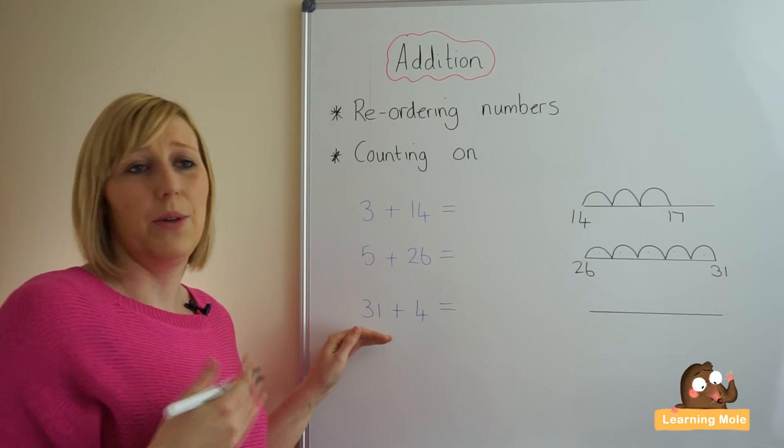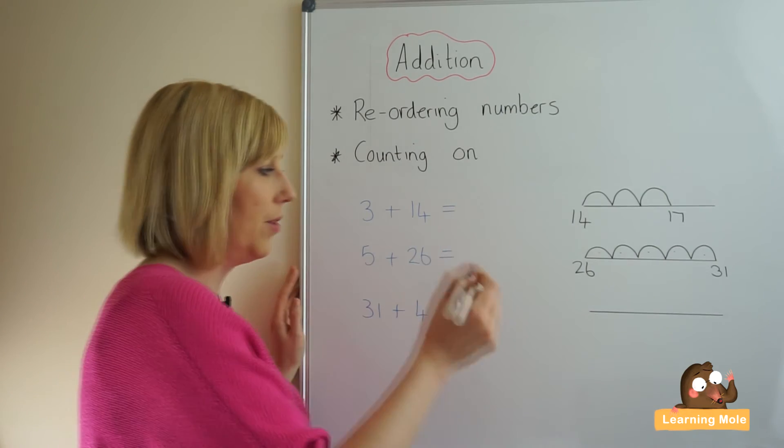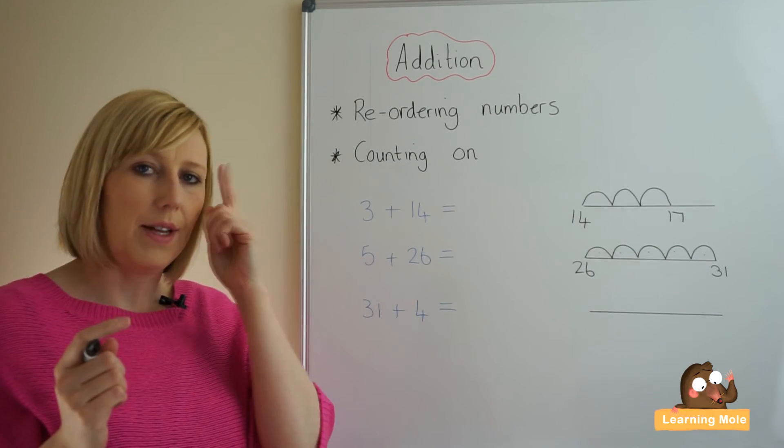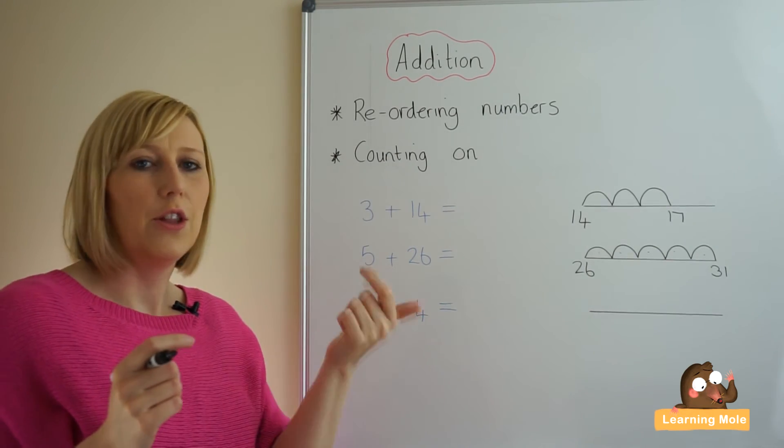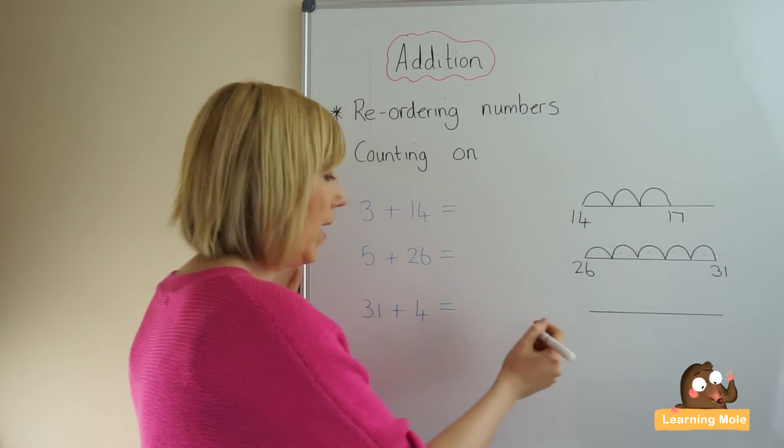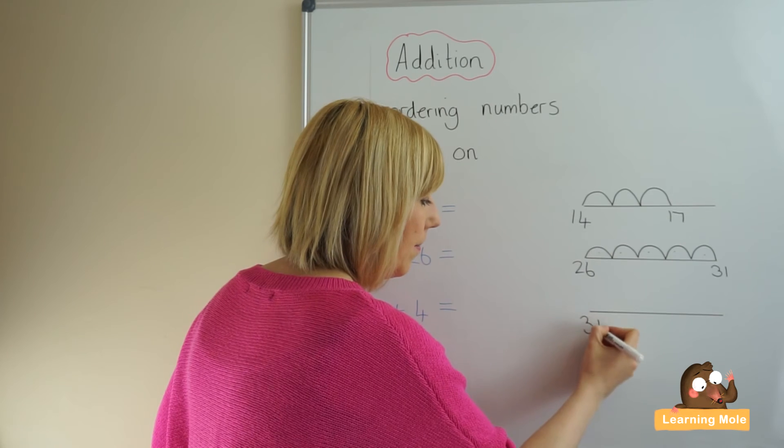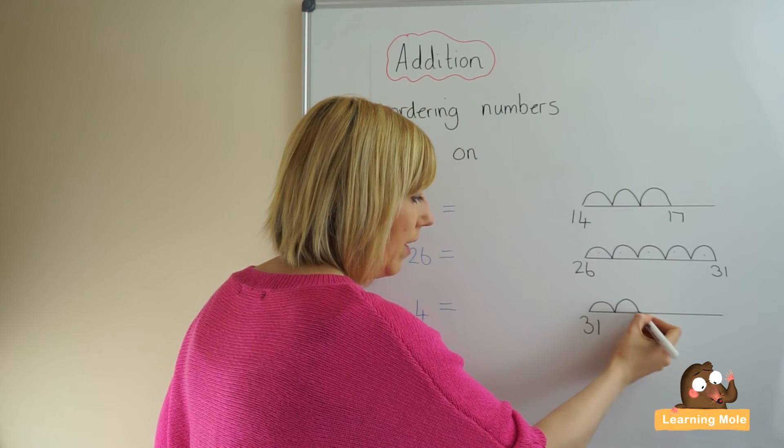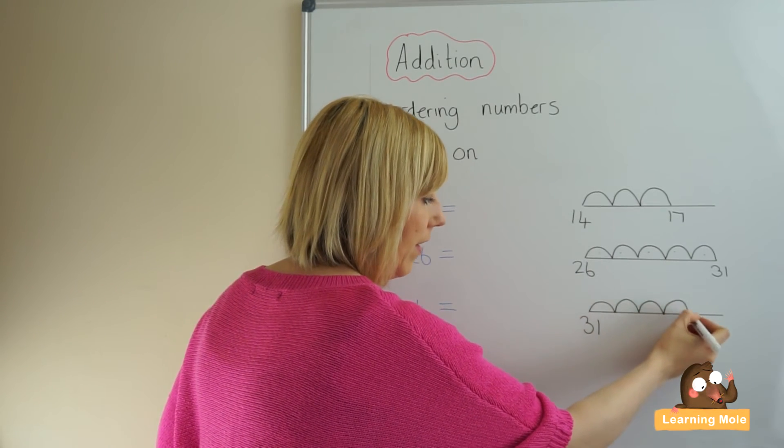Last one, we already know it's already in the correct order so we put 31 in our heads: 31, 32, 33, 34, 35. And on our number lines: 31, 32, 33, 34, 35.